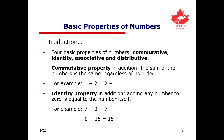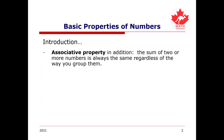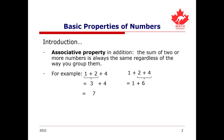For our next property, the associative property in addition means that the sum of two or more numbers is always the same regardless of the way you group them. For example, if you have 1 plus 2 plus 4, we can add 1 and 2 first, which gives us 3, and then add 4 to get 7. Or we could add 2 and 4 first to get 6, then add 1 to get 7 as well.